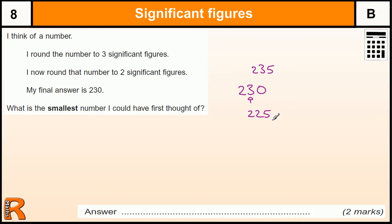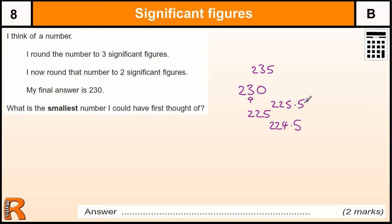For this number itself, if it's rounded to three significant figures — because there are three figures there — it could have been at a minimum 224.5, because that's the smallest number that would round to 225 when looking at three significant figures. The largest it could have been was just less than 225.5. So your answer is 224.5.